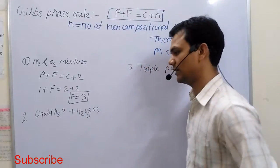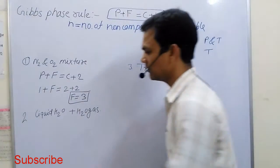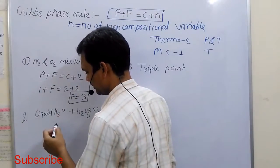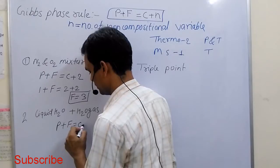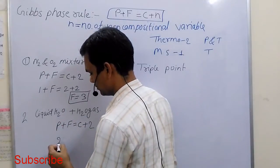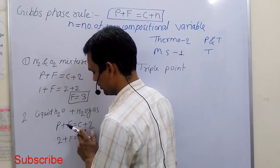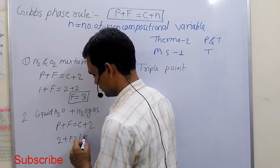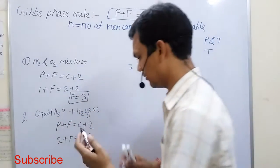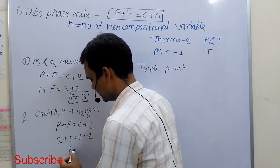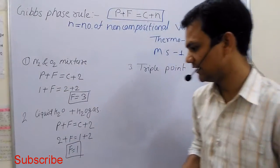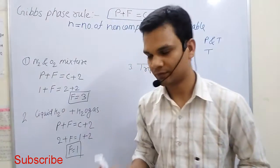Now consider another example: liquid H2O and gas H2O coexisting. Applying P plus F equals C plus 2, the number of phases is 2, the number of chemical components is 1 (water), so 2 plus F equals 1 plus 2, giving F equals 1. The degree of freedom here is 1.